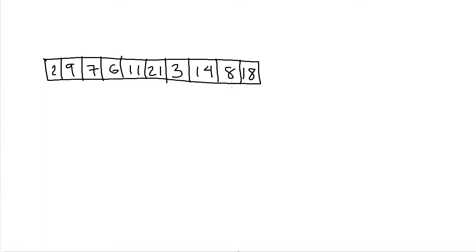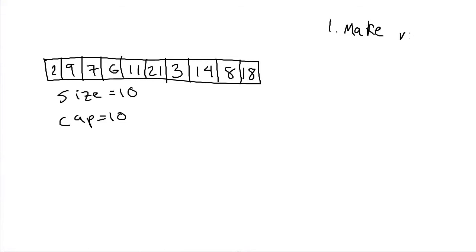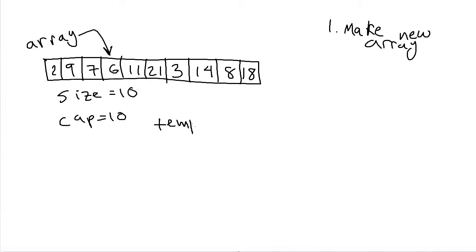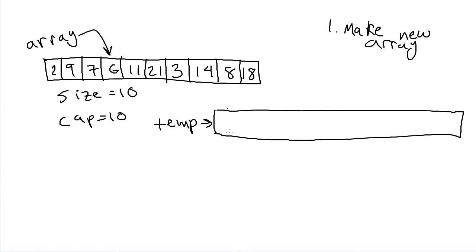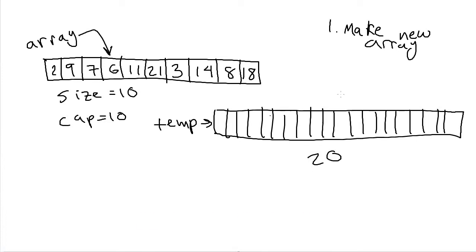Let's say we have an array that's completely filled — size equals 10 and capacity equals 10. We need to add to the end, but there's no way to extend an array after it's filled. We can't call some array method for that; we have to do it ourselves. The way to do it is to make a whole new array. So step one is: make a new array, maybe called 'temp', that's bigger than the old one — let's say twice as big, so size 20.